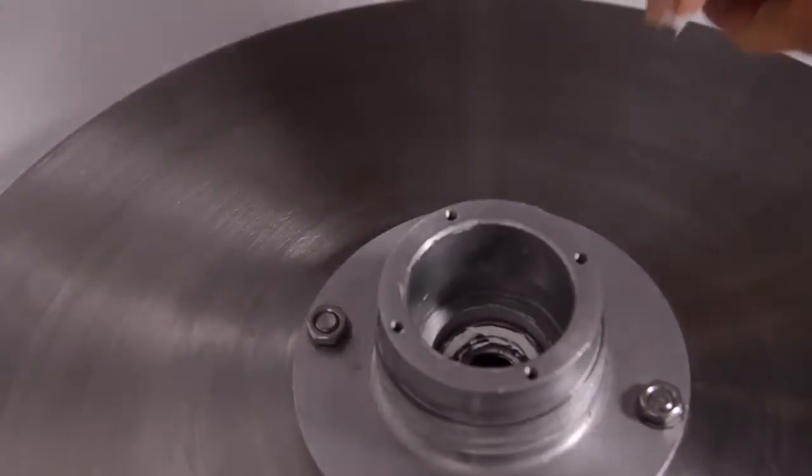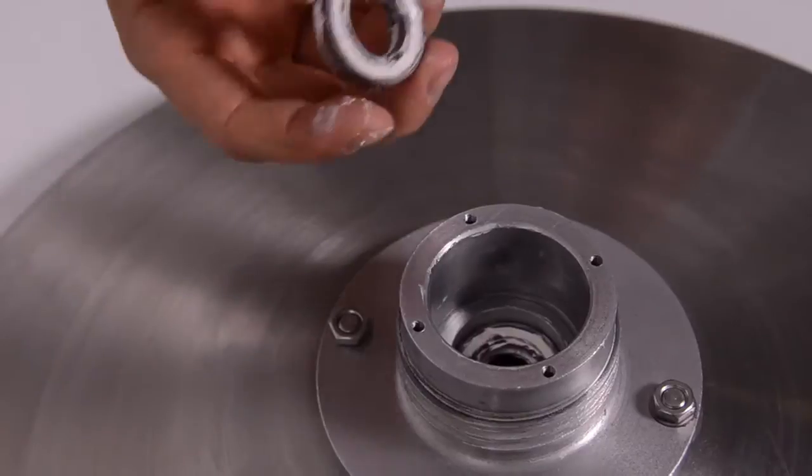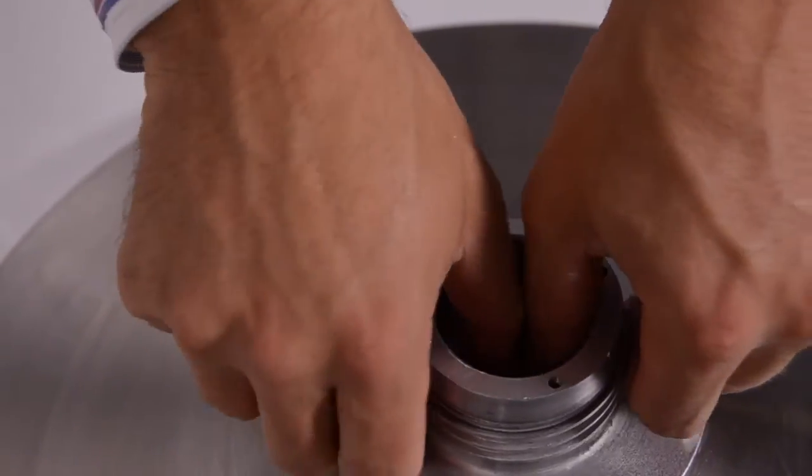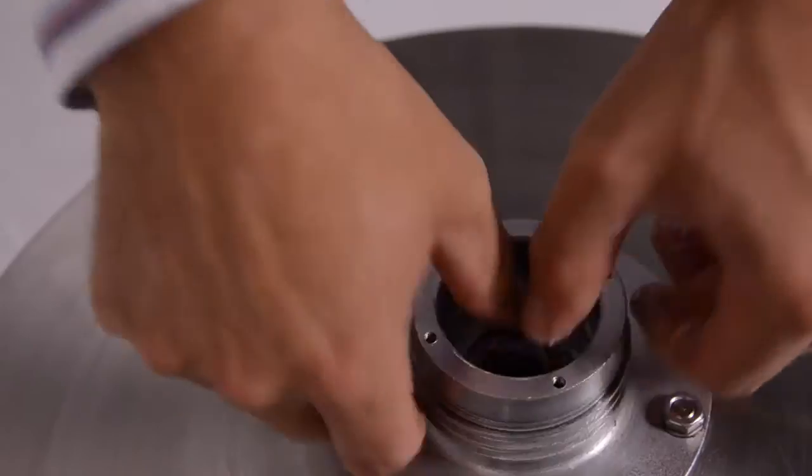Press the seals one by one into the bearing seat. The seals, bearings and drive shaft kit have a white food grade grease applied to them.